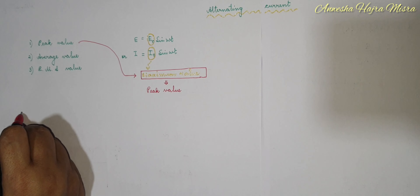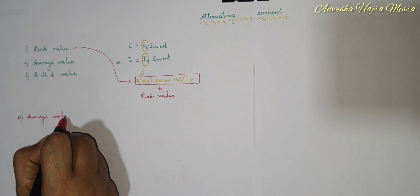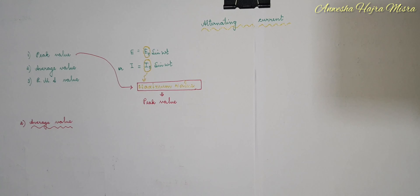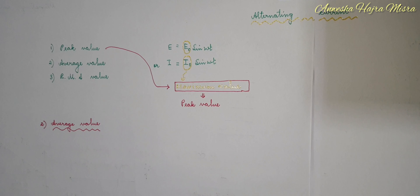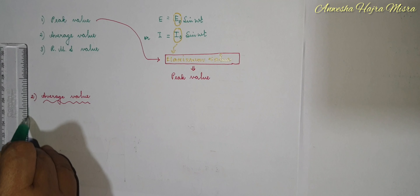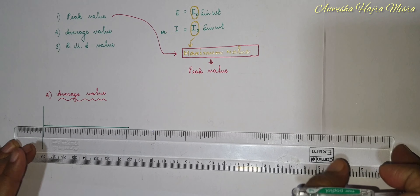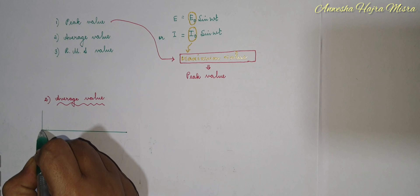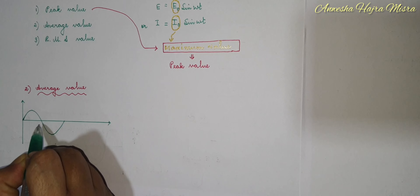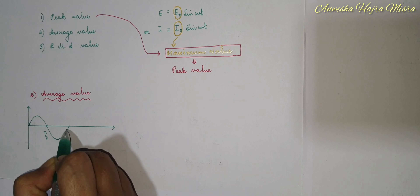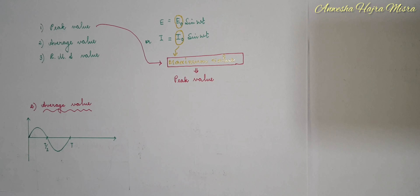Next, what is average value? What is the average value of EMF? Say you have a circuit in which you have an AC current flowing through it. So here you have an alternating current flowing through your circuit. In a particular time — say in the time T/2 — find the charge flowing through your circuit.